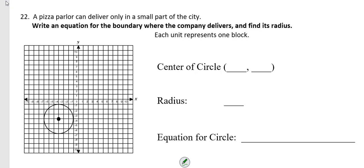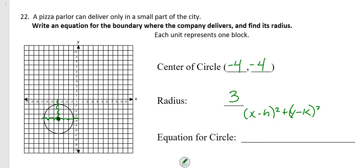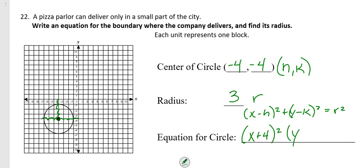The last problem: a pizza parlor can deliver only within part of the city. Write an equation for the delivery boundary and find its radius. The center of the circle is at (−4, −4) from the graph. The radius is 3. Plugging into the standard equation (x − h)² + (y − k)² = r²: (x + 4)² + (y + 4)² = 9.